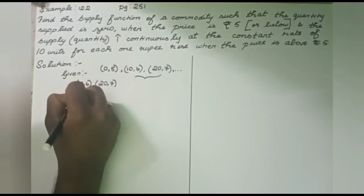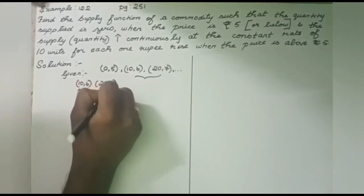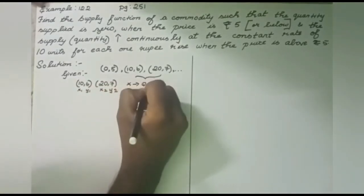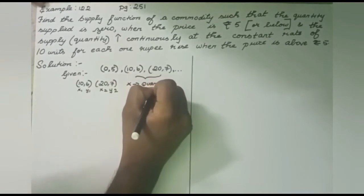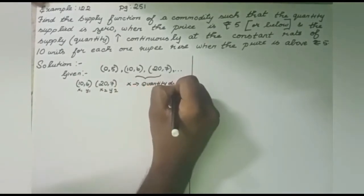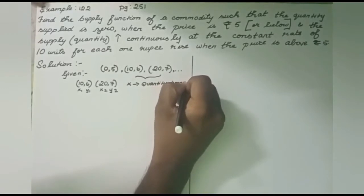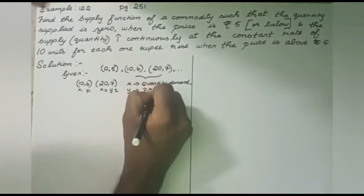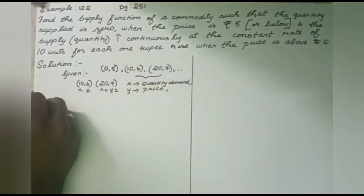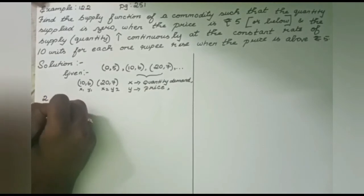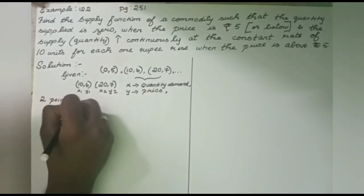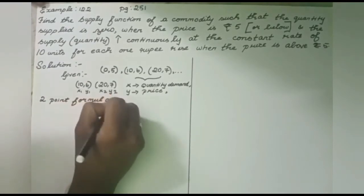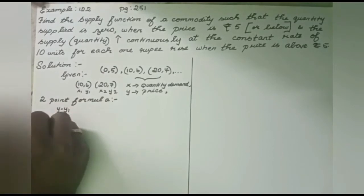For this question, what are our two points x and y? From the given information, we can see ten comma six, twenty comma seven. But why didn't I take zero comma five? Because that's for the first part of the question, not the answer. Or why not thirty comma eight, forty comma nine? We need to clearly identify x1, y1 and x2, y2. So make yourself clear that ten comma six is x1, y1 and twenty comma seven is x2, y2.